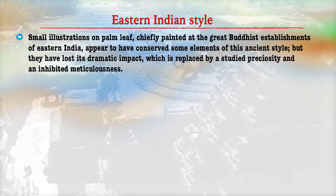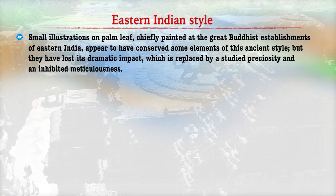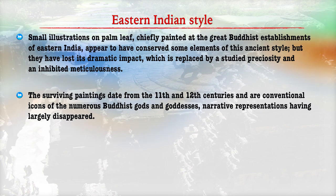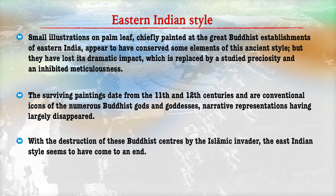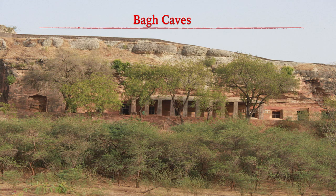Let us now move to the different styles that developed in various parts of India. In the Eastern Indian style, small illustrations on palm leaves, chiefly painted at the great Buddhist establishments of Eastern India, appear to have conserved some elements of ancient times. The surviving paintings date from the 11th and 12th centuries and have numerous Buddhist gods. Narrative representations have largely disappeared. However, with the destruction of the Buddhist centers by Islamic invaders, there was a decline in the Eastern Indian style of painting.